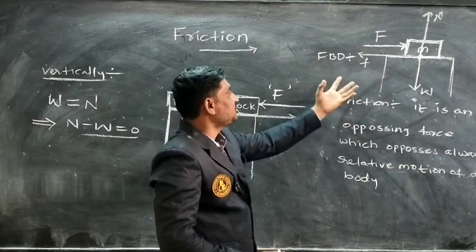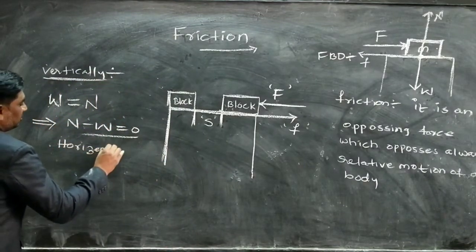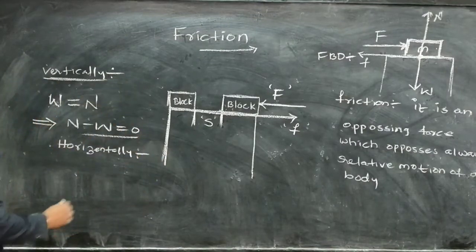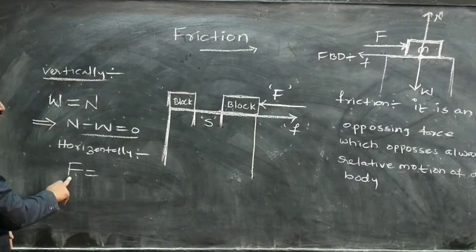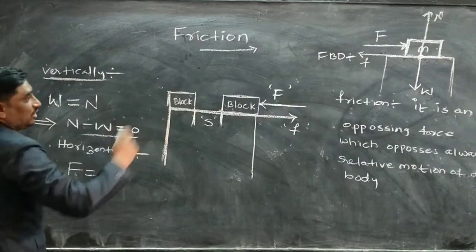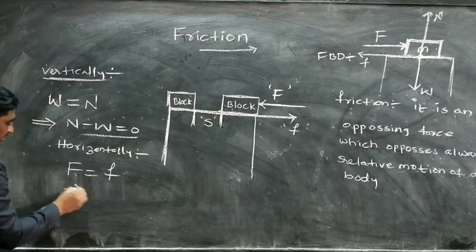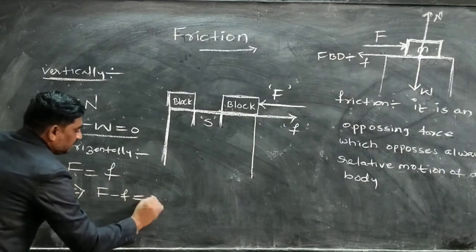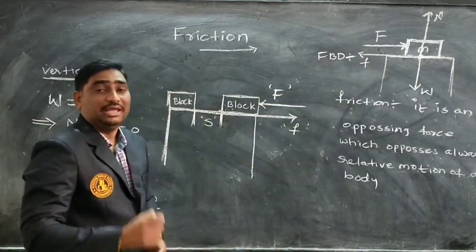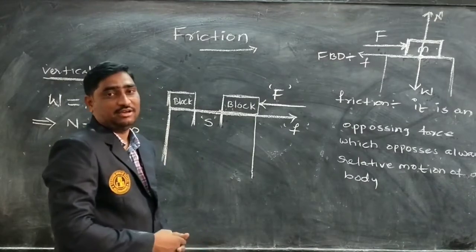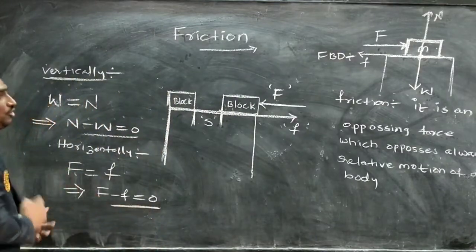So along the horizontal direction also, two forces are acting. The net force: one force acting towards the right side of the block is capital F, which is known as applied force or forward force or external force, and it must be equal to the frictional force acting towards the left side of the wooden block. So which implies F minus small f must be equal to zero. When the applied force and the force of friction are equal in magnitude and opposite in direction, along the horizontal direction the net force acting on that object must be equal to zero.